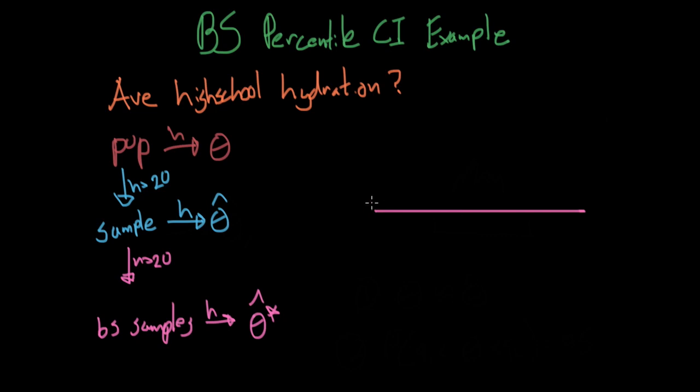We use these theta hat stars to construct the bootstrap sampling distribution, which we have right up here. I'll go ahead and denote this with a little theta hat star. Now, a good size for the bootstrap sampling distribution will depend, and we'll talk about that later. But 10k is always a good start.